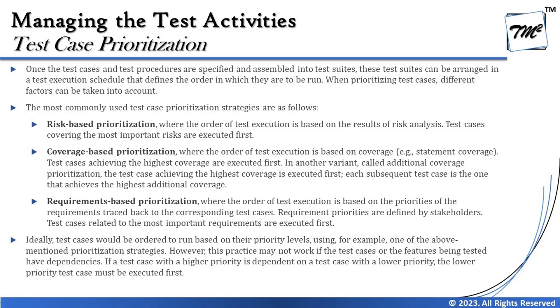The third option is requirement-based prioritization, where the order of test execution is based on the priorities of requirements traced back to the corresponding test cases. Requirement priorities are defined by stakeholders. Test cases related to the most important requirements are executed first — highest priority requirement test cases are prioritized highest, then medium priority, then low priority requirements.